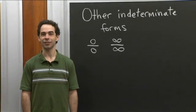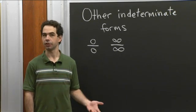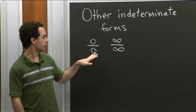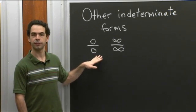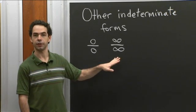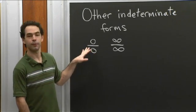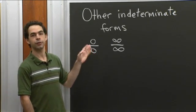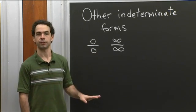Hi, welcome back to recitation. You've been talking about computing limits of some indeterminate forms. In particular, you used L'Hôpital's rule to help you out with some limits in the form 0 over 0 or infinity over infinity. So these are the two indeterminate ratios. And when you have a limit that's in the form of an indeterminate ratio, one tool you can use to help compute the limit is L'Hôpital's rule.